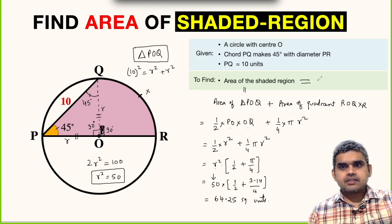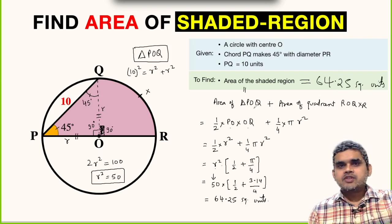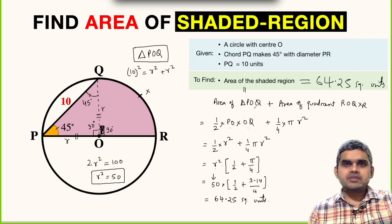So the area of shaded region is 64.25 square units. I hope you enjoyed this video. If you want to get more such videos, do subscribe to my channel. See you in the next video.